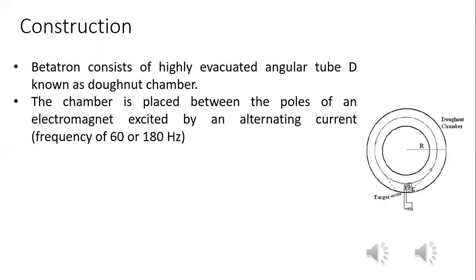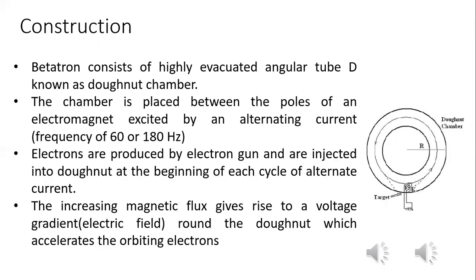The doughnut shape chamber is placed between alternating electromagnets. The electromagnet polarity changes with a frequency of 60 to 180 Hz. Electrons are emitted and injected at this frequency. When you inject at this alternating current frequency, the electron will be accelerated.